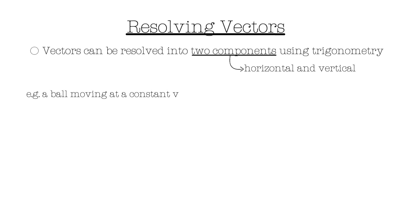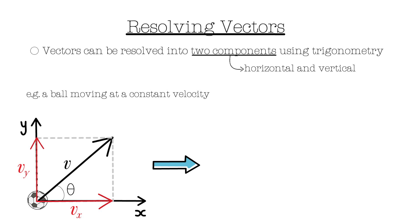An example of this is a ball moving at a constant velocity. We can draw the axes taking the right-hand side and up as positive. The ball is moving at a constant velocity of v meters per second at an angle of theta from the horizontal. We want to resolve the force into its x and y components, which are represented by the red arrows. If I were to put the red arrows together, head to tail, you can see it forms a right-angled triangle where the hypotenuse is the initial vector quantity, v.